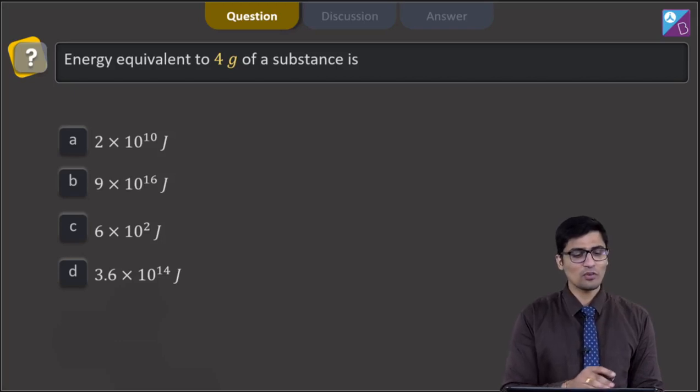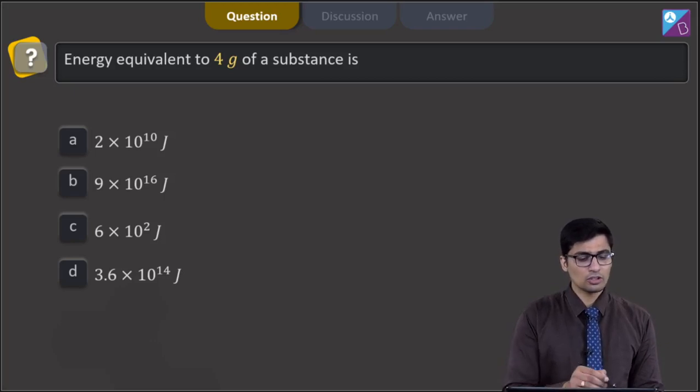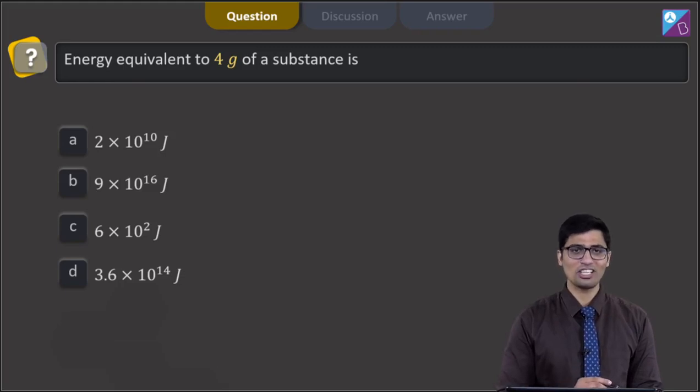This is question number 9. In this question, the energy equivalence of a 4 gram of a substance is, 4 options are 2 into 10 raise to power 10 joules, 9 into 10 raise to power 16 joules, 6 into 10 raise to power 2 joules or 3.6 into 10 raise to power 14 joules.